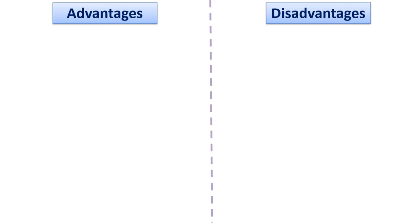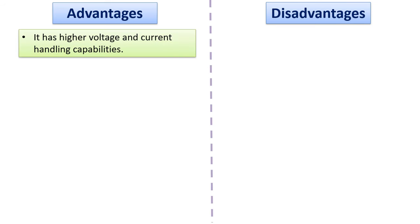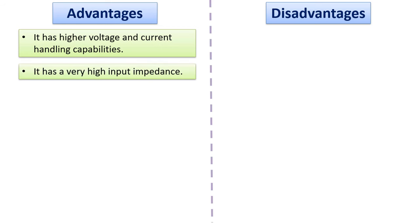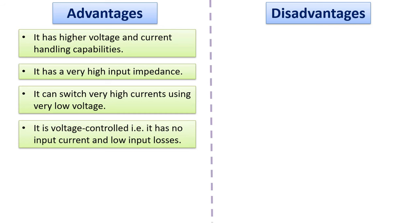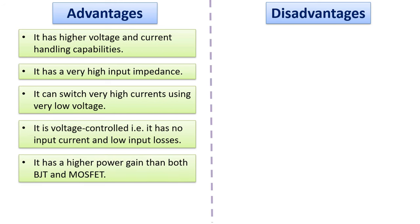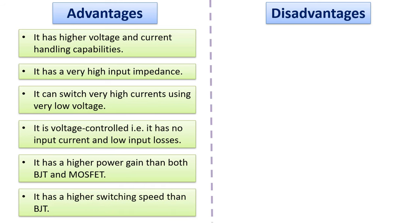Now let's look at the advantages and disadvantages of IGBTs over BJT and MOSFET transistors. As a whole, the IGBT has the advantages of both. Starting with the advantages: it has higher voltage and current carrying capabilities, very high input impedance, and can switch very high currents using very low voltage. It is voltage-controlled, so there is no input current and input losses are low. It also has higher power gain than both BJT and MOSFET, and a higher switching speed than a BJT.